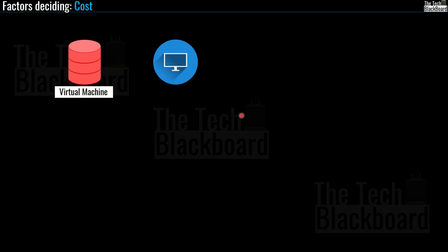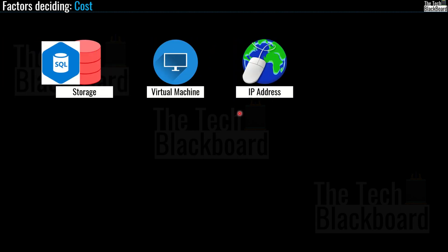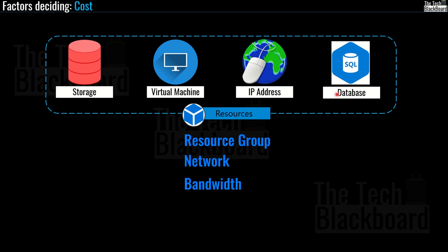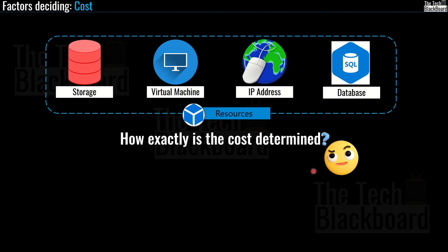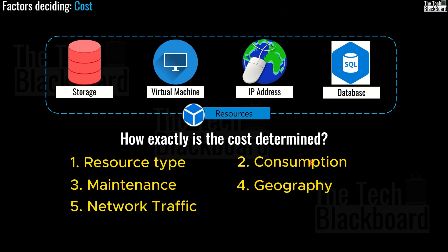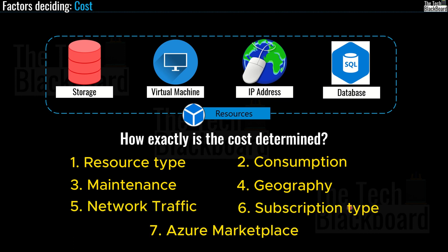Our solutions can have many different components and services — for example, storage, virtual machines, IP addresses, databases, and other components such as resource groups, networks, and bandwidth. But how exactly is cost determined? It depends on many factors such as resource type, consumption, maintenance, geography, network traffic, subscription type, and Azure Marketplace.